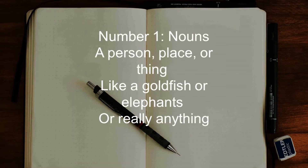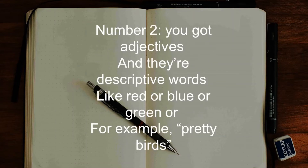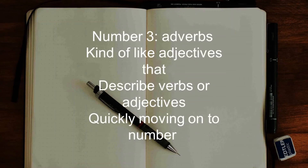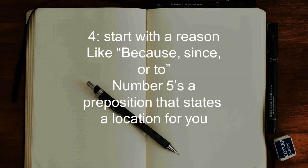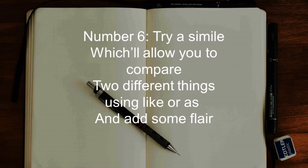Nouns: a person, place, or thing like a goldfish or elephant, or really anything. You've got adjectives — descriptive words like red, blue, or green. For example, pretty birds. Adverbs: kind of like adjectives that describe verbs or adjectives. You could also start with a reason like 'because.' A preposition that states location, or try a simile which allows you to compare two different things using 'like.'